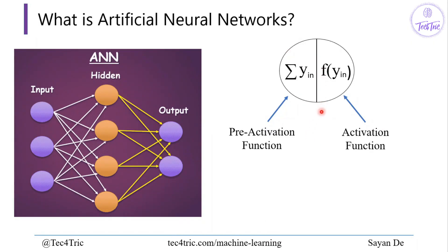Let's look at a single node more closely. The node has two parts: pre-activation function and activation function. The pre-activation function takes the summation of all the inputs as net input, and then it passes that net input to the activation function. The activation function then processes that net input to produce an output.